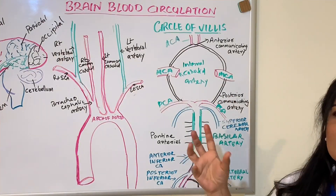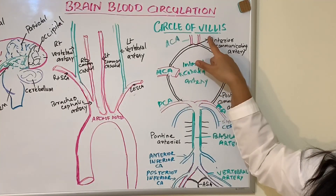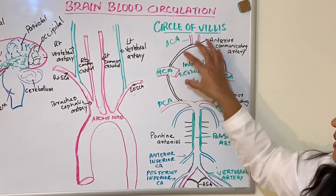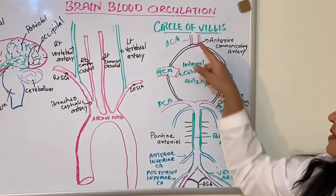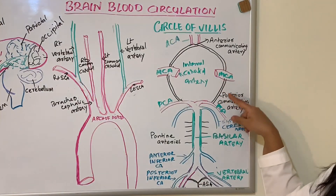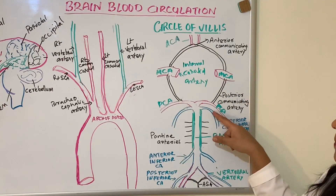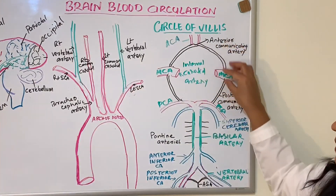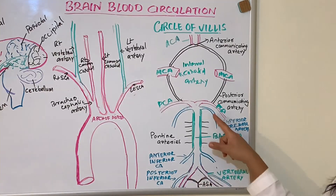In the cerebrum, the anterior cerebral artery, the middle cerebral artery, and the posterior cerebral artery each supply different areas of the brain. These three arteries are connected by communicating arteries: the two anterior cerebral arteries are connected by the anterior communicating artery, and the posterior communicating artery connects the middle cerebral artery and posterior cerebral artery with the anterior cerebral artery.